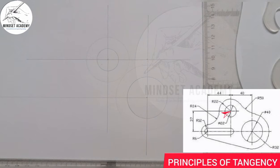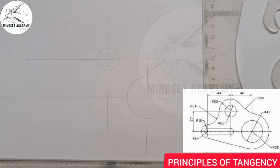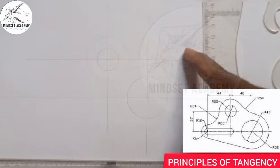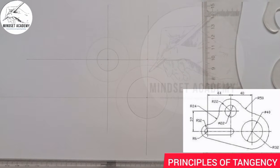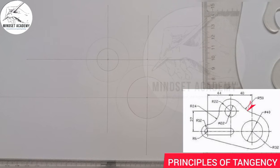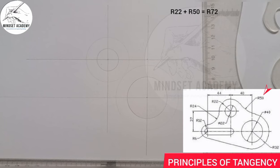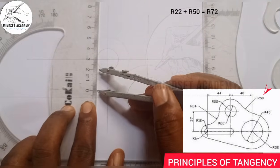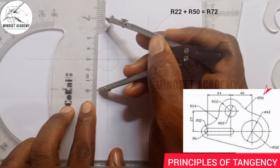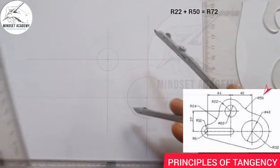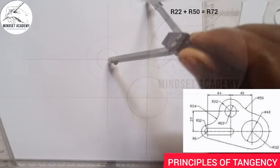We have another circle connecting these two circles. The two circles are outside the bigger circle — it's coming from the outside, so it is external. When it is external, you add the radii. So if I add the radius of 22 from this point and the radius of 50, that gives us 72. I'll measure 72 on my ruler, place it at the center here, and strike an arc.